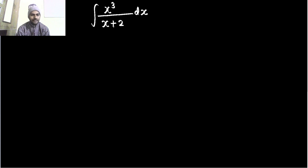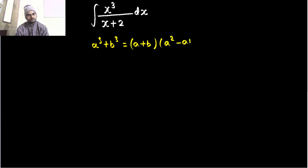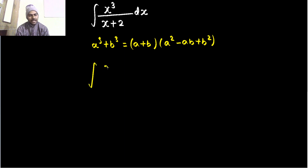But first try to manually create the denominator in the numerator. We can use the formula a cube plus b cube, which is given by a plus b times something. Here a is x, and we want b to be 2 because that will cancel with the denominator. So if b is 2, then b cube will be 8. So let's add and subtract 8 in the numerator.